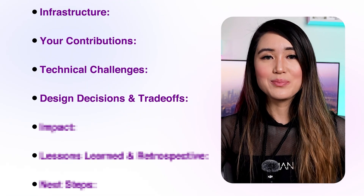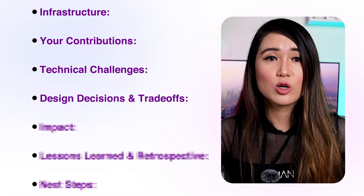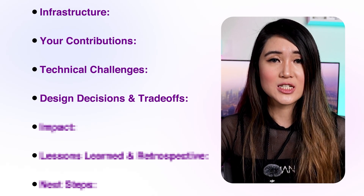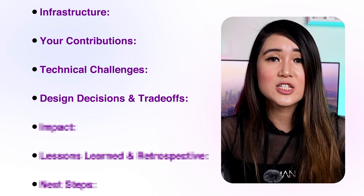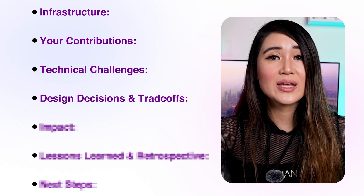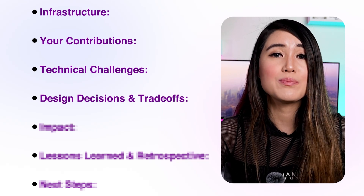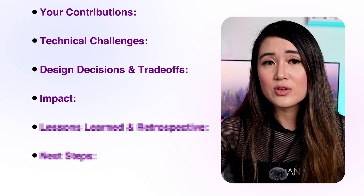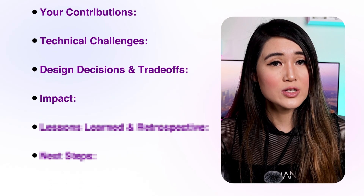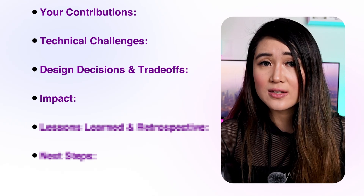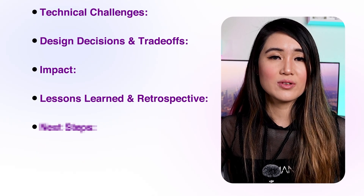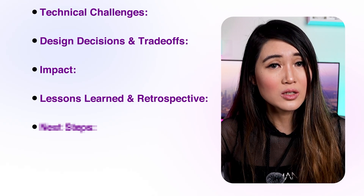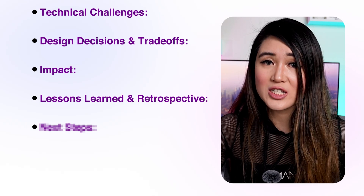Design decisions and trade-offs: for example, did you build entirely new components or repurpose existing infrastructure? What metrics did you prioritize? This is one of the most important sections because being a senior engineer isn't just about completing the project — it's about weighing the pros and cons of each approach and picking the one that works best. Impact: you can discuss things like what number of users your project affects, or whether it increased revenue or decreased latency of an existing feature by X percent. Lessons learned and retrospective: is there anything that went wrong that your team would do differently? What did you learn that will streamline engineering efforts for future projects?